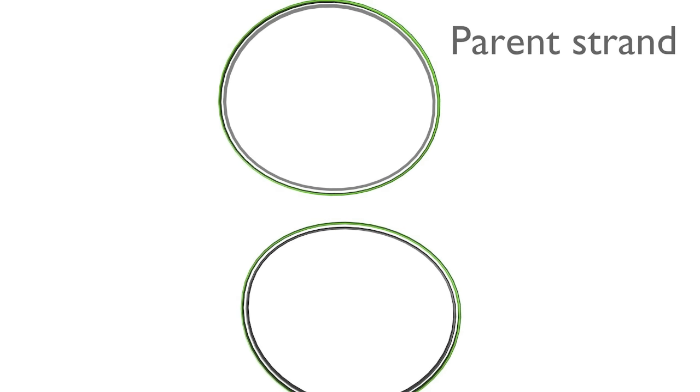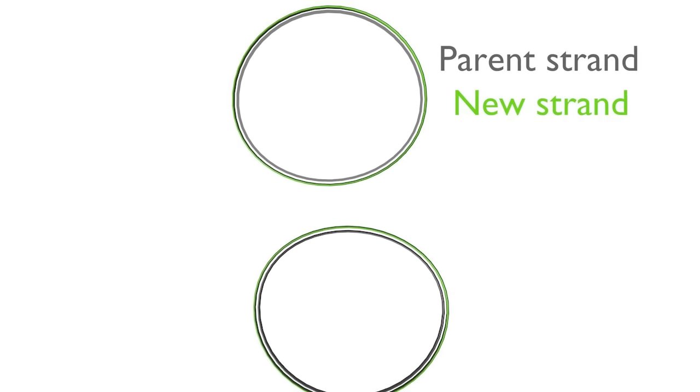The two daughter DNA molecules now consist of one parent strand of DNA shown in grey and one newly made strand shown in green. Thus DNA replication is termed semi-conservative.